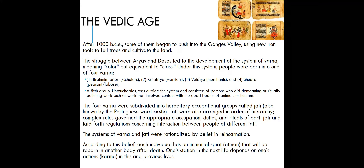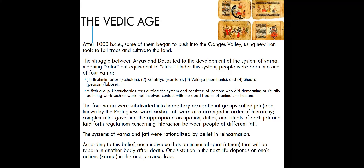The conflict was based on the color of skin between Arya and Dasas. The conclusion of this conflict ended with the Arya taking control over the subcontinent of India, leading to the development of Varna — another word meaning color but equivalent to class. Under this system people were born into four Varna.